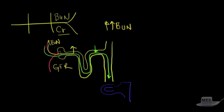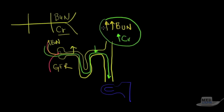Because the GFR is down, flow is slower, so more BUN is going to be reabsorbed, making it go up even more. Creatinine is also going to go up because the GFR is low, but it's not going to go up any more than that because it's not being reabsorbed. So the BUN goes up more than the creatinine when you have a decrease in GFR.